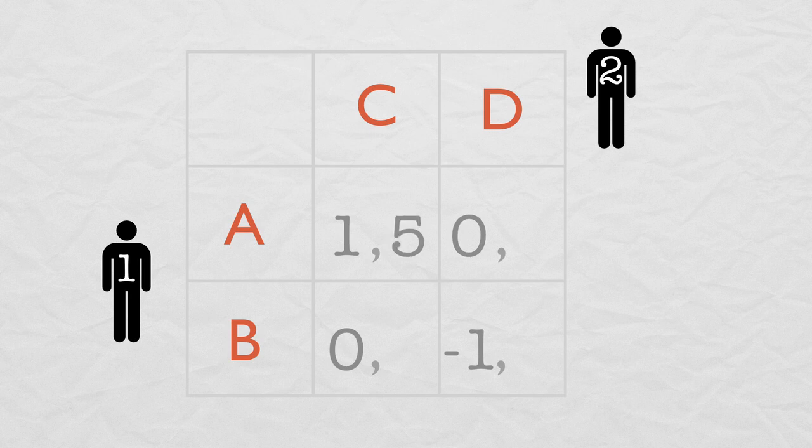Player 2's payoffs are 5 if they play A, C, and 2 if they play A, D. And actually, there's no point in me saying what his payoffs are in the other two cases because we already have enough information to find an equilibrium. But how can that be? It's simple.